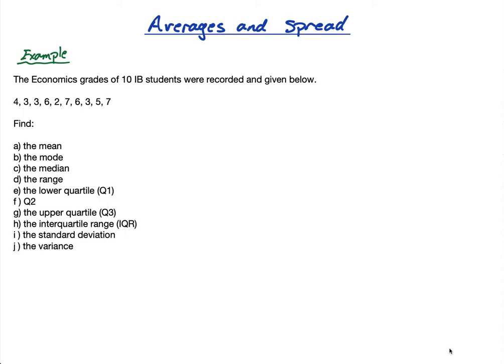Hi everybody, so in this lesson I'm going to do all these things together: the mean, the mode, the median, the range, the lower quartile, the Q2, upper quartile, interquartile range, standard deviation, and the variance. And I'm going to do them using this example: the economics grades of 10 IB students were recorded and given below.